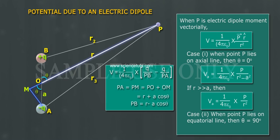Case 2: When point P lies on equatorial line, then theta is equal to 90 degrees. VE is equal to 0. Thank you.